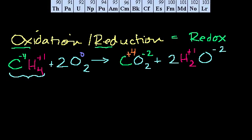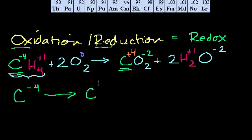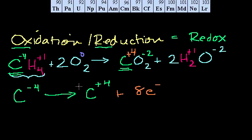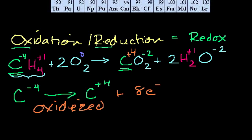So what's getting oxidized and what's getting reduced? The carbon went from an oxidation number of minus four to plus four. Carbon went from hogging four electrons to having four electrons hogged from it — giving away four electrons. Over this process, carbon gave away eight electrons total (a difference of eight). Its charge went up, so it has been oxidized. Carbon has been oxidized.